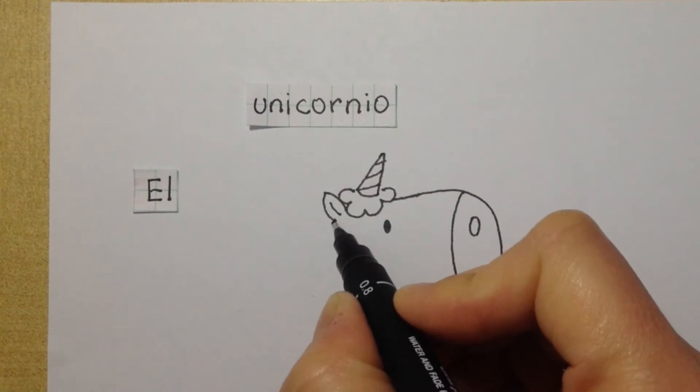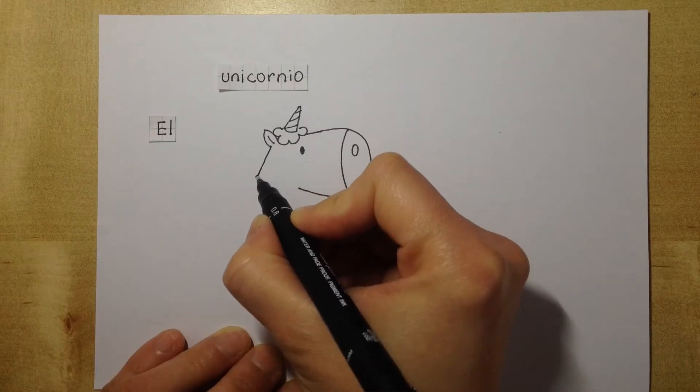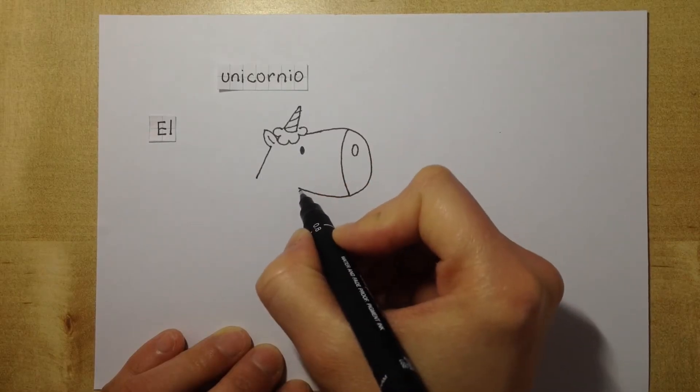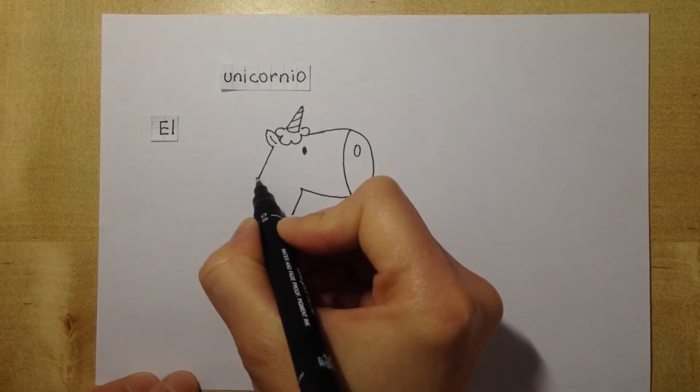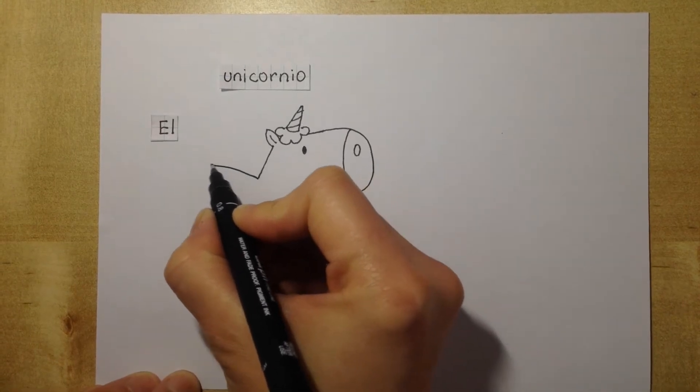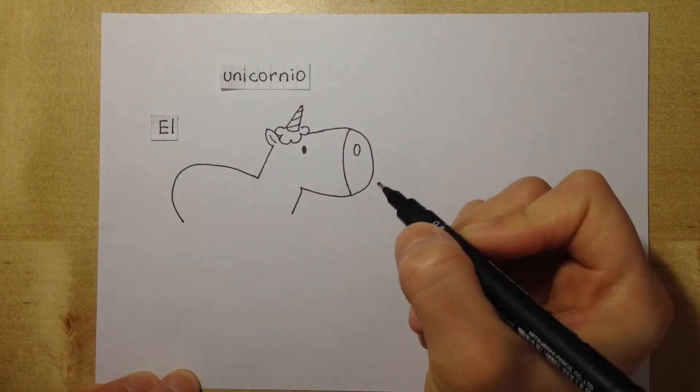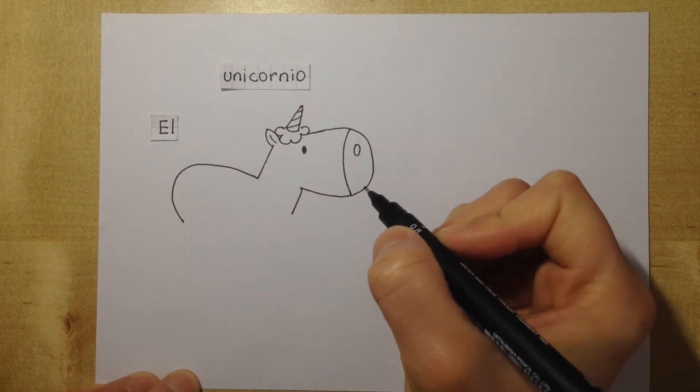From there we do a line down to make the neck. Then the body, round body, finishing with his back leg.